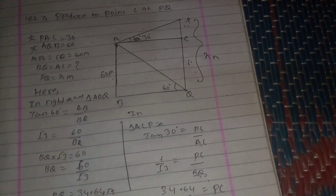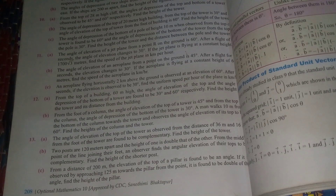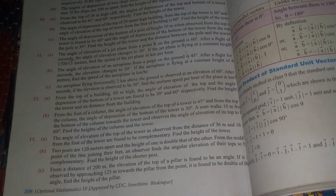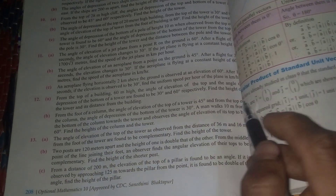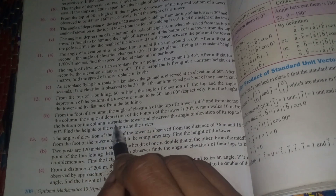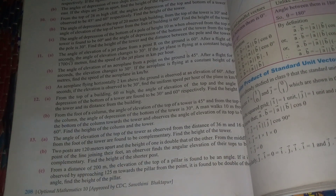Next question: From the foot of a column, the angle of elevation of the top of a tower is 45 degrees. From the top of the column, the angle of depression of the bottom of the tower is 30 degrees. A man 10 meters from the bottom of the column towards the tower observes the angle of elevation of the top to be 60 degrees. Find the height of the column and the tower.